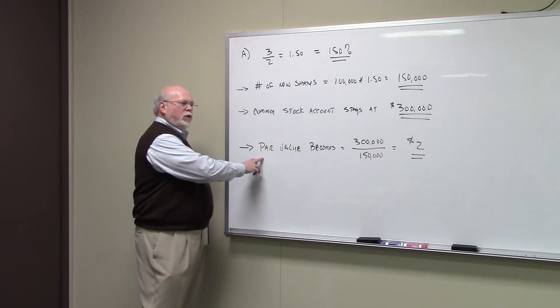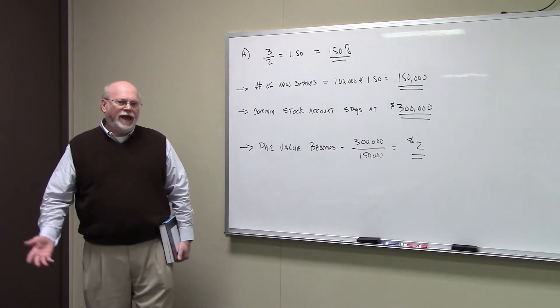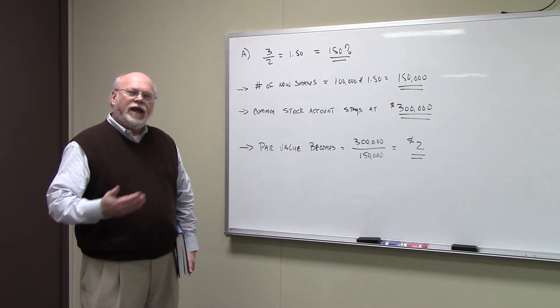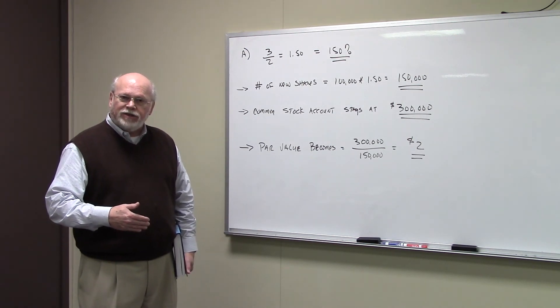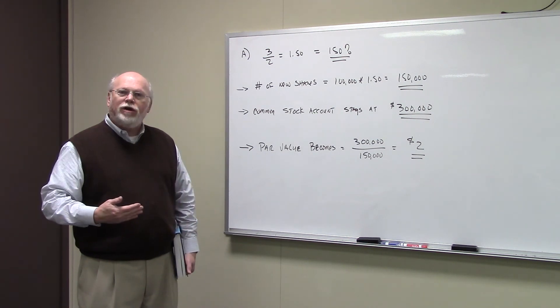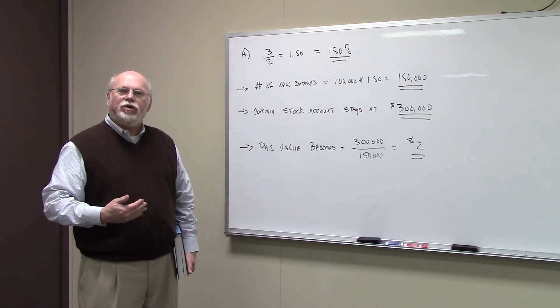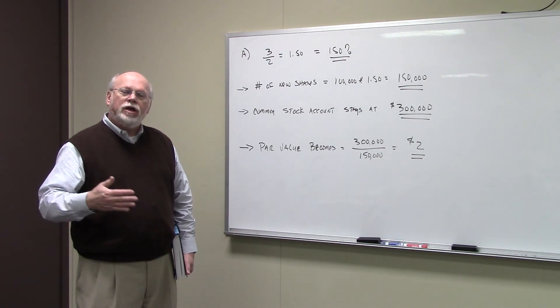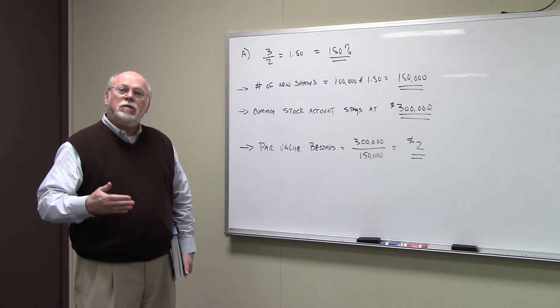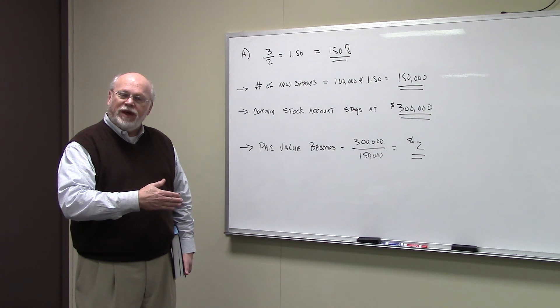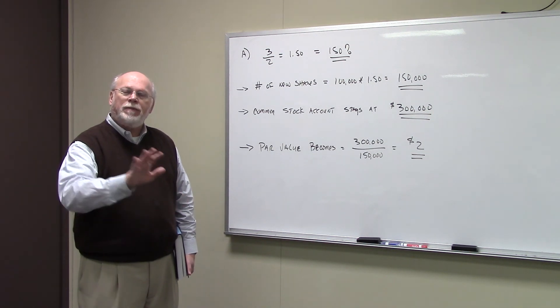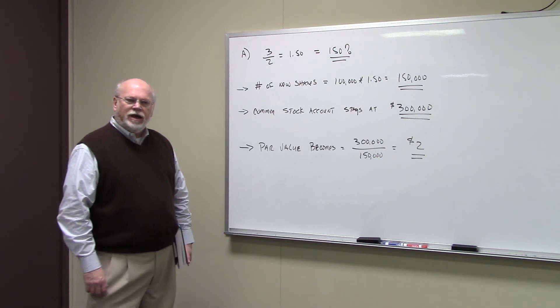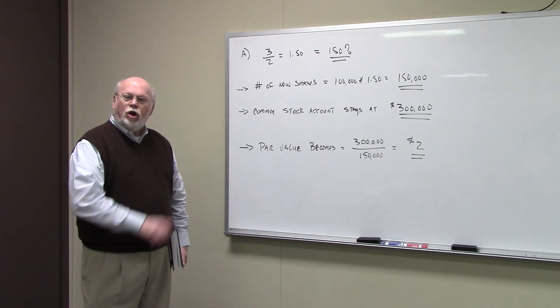What happens to the par value? Well, now you have $300,000 in the common stock account, not spread over 100,000 shares, but spread over 150,000 shares. So you're going to see the par value is going to change, go from $3 a share to $2 a share. $2 times 150,000, the new number of shares outstanding, gives you the $300,000 in the common stock account on the balance sheet.